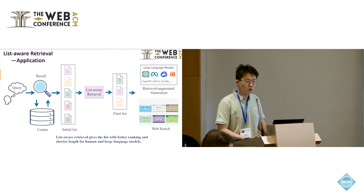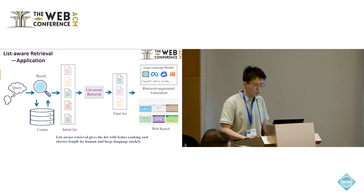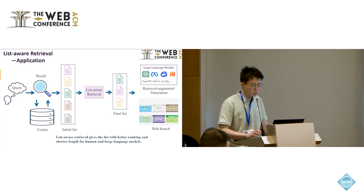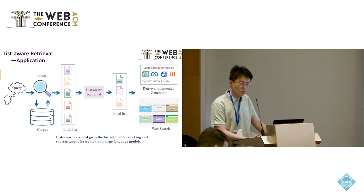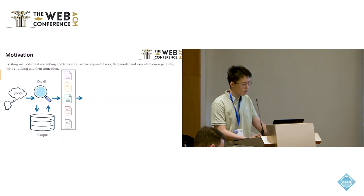List-Aware Retrieval gives the list with better ranking and shorter lengths. It has many practical applications. For example, in web search, it can save the cost of human browsing and avoid the interference of the wrong information. In Retrieval Augmented Generation, it can compress the text lengths processed by large-language models and avoid misleading from the error messages.